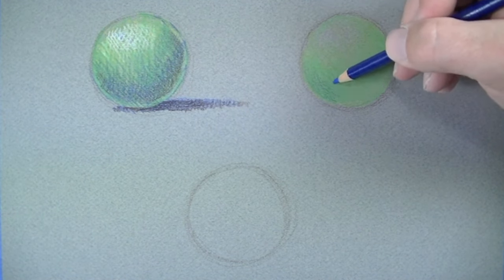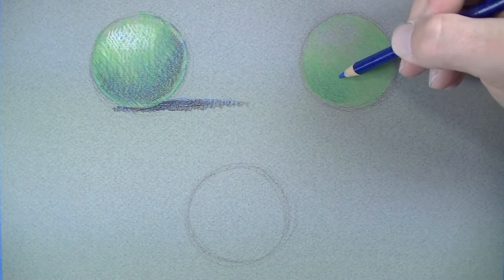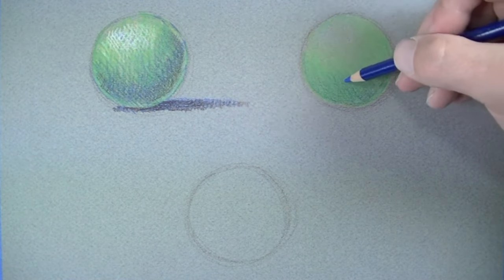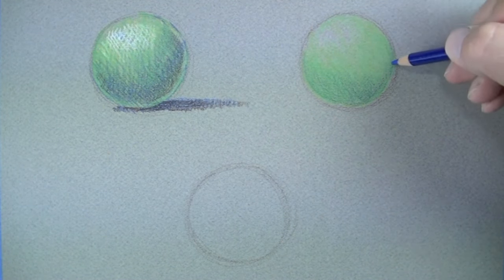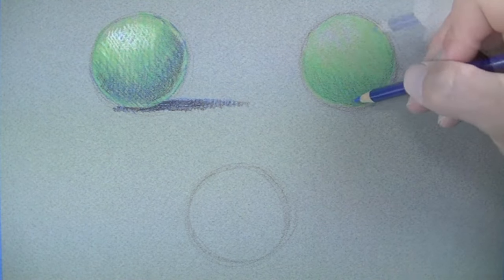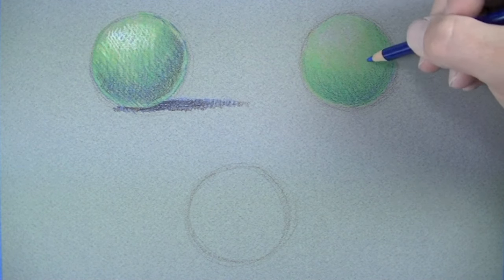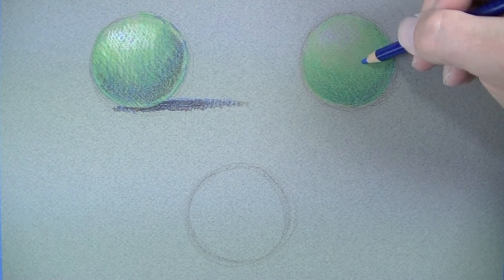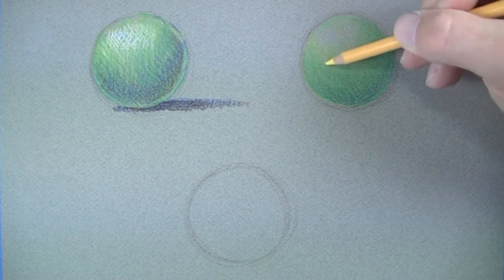Next, we'll begin to layer in some of the areas of core shadow with a dark blue over the top of the green. Some natural color mixing will occur. To create a smooth application, you may consider making your marks in small, circular directions.